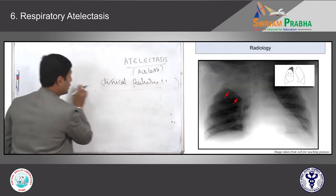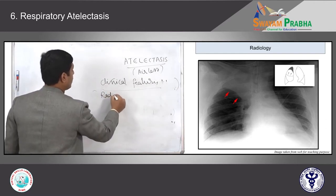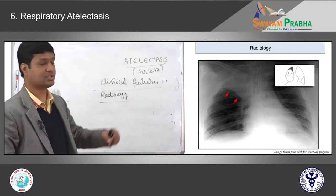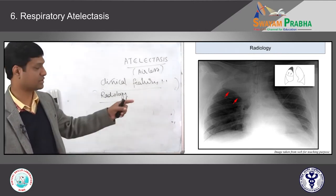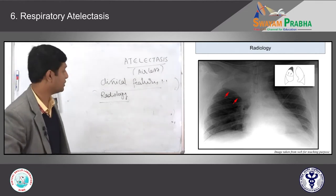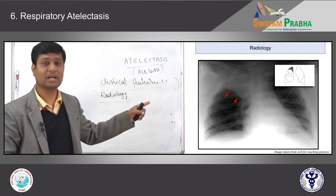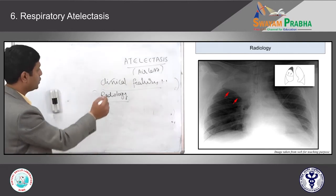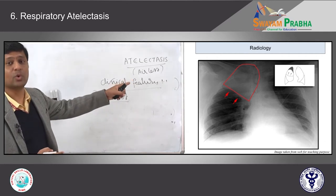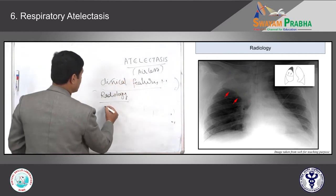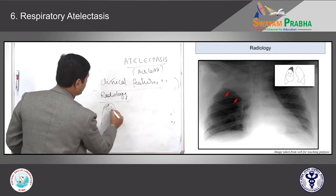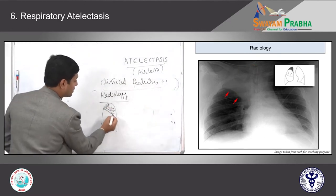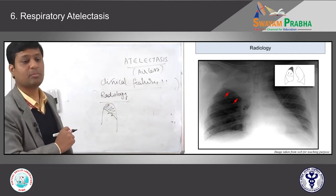Next, radiology: if you take a chest X-ray of any patient who has atelectasis — that means airless lung — this is an anterior-posterior view of a chest X-ray of an atelectatic patient. There are two arrow marks, and the upper lobe has no air, showing homogeneous gray-white opacification. You cannot see the upper lobe properly because there is no air, and the sulci become more prominent — those arrow marks are the sulci.